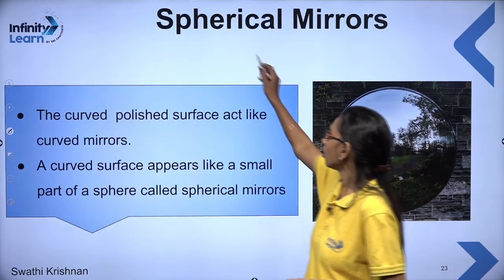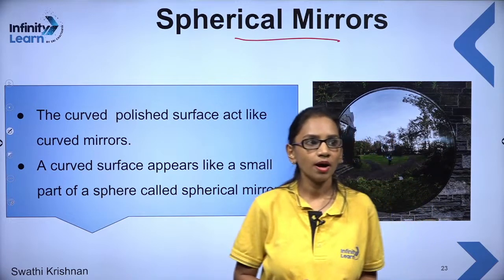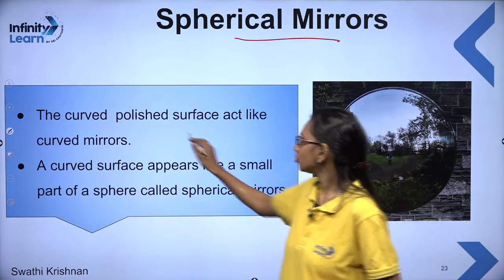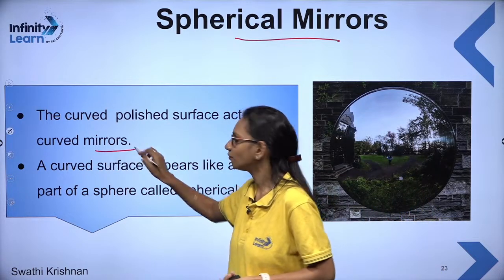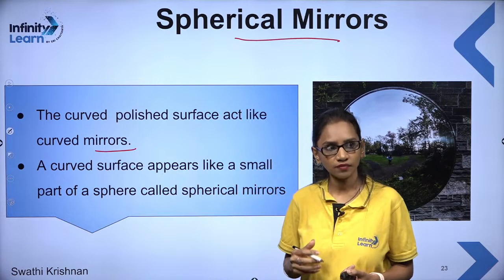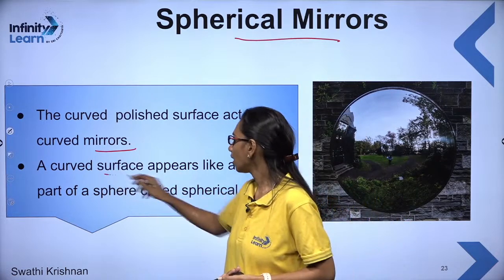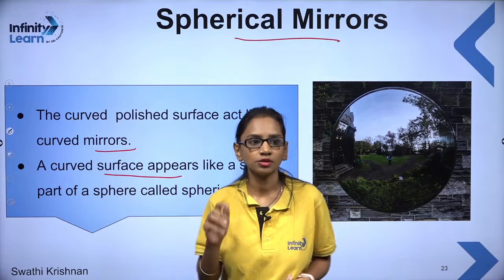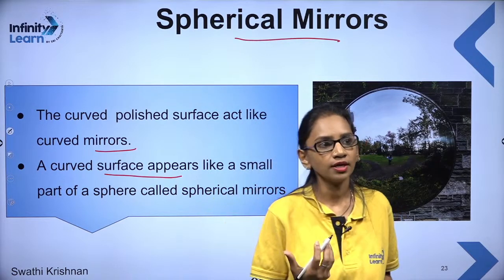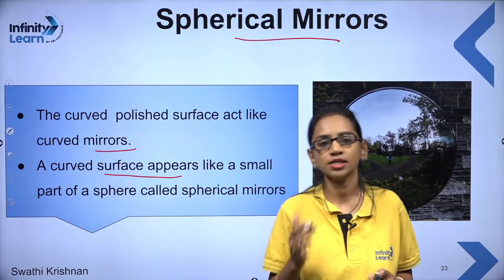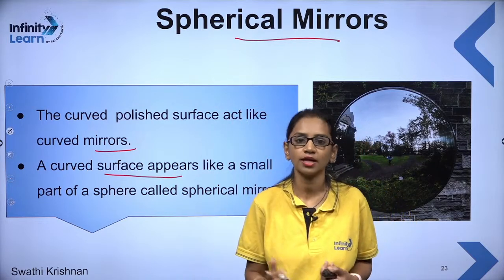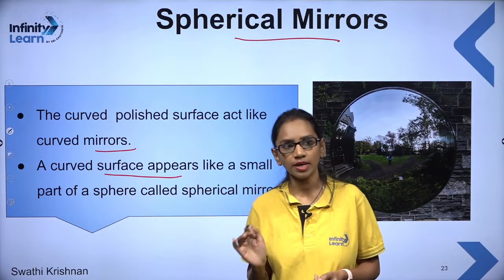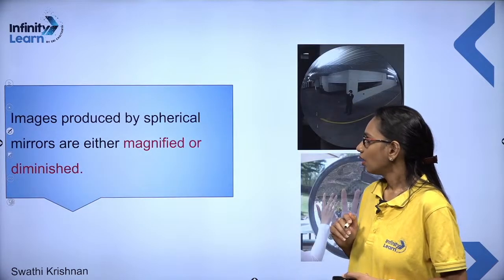Now let us study spherical mirrors. The curved polished surface acts as a curved mirror, which we also call a spherical mirror. The curved surface appears like a small part of a sphere, called a spherical mirror. Spherical mirrors are so called because they appear to have been cut out from a sphere. Images produced by spherical mirrors are either magnified or diminished.